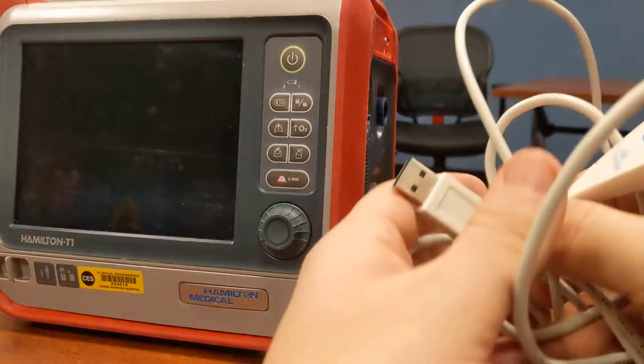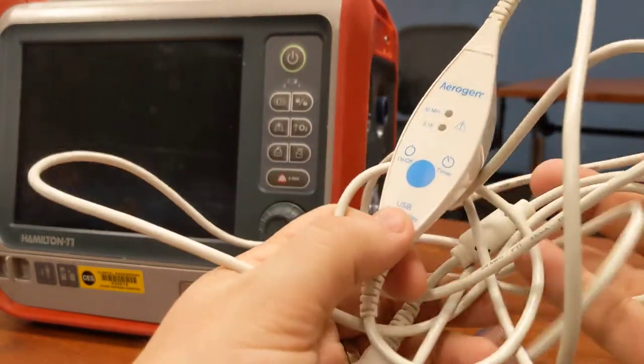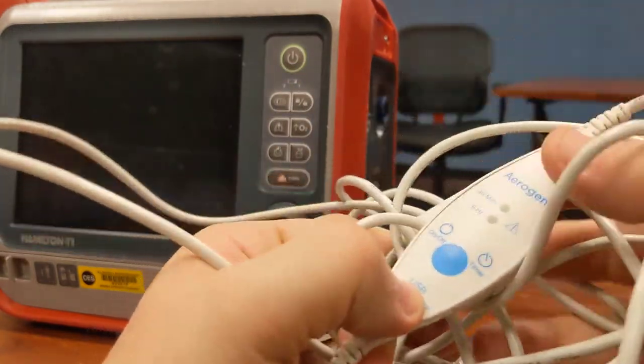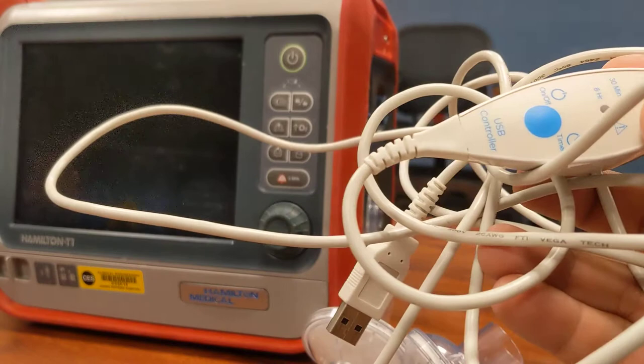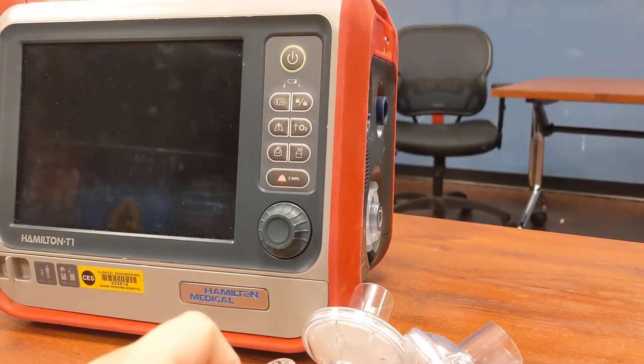So if we have a patient that needs to be on continuous nebs or even just an intermittent neb while on our ventilator, we can use these aerogen setups. This is also the same setup we would use for inhaled foletri.